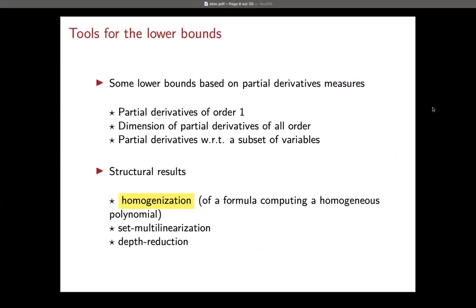What are the tools we use for lower bounds? There is one tool used in many of the results mentioned, including Baur-Strassen. We define a measure associated to a polynomial, which is the rank of some set of partial derivatives. There are parameters we can choose and some variants. This measures the difficulty of a polynomial. For this approach to work, we show that if a small restricted circuit computes a polynomial, then that polynomial has a small measure.